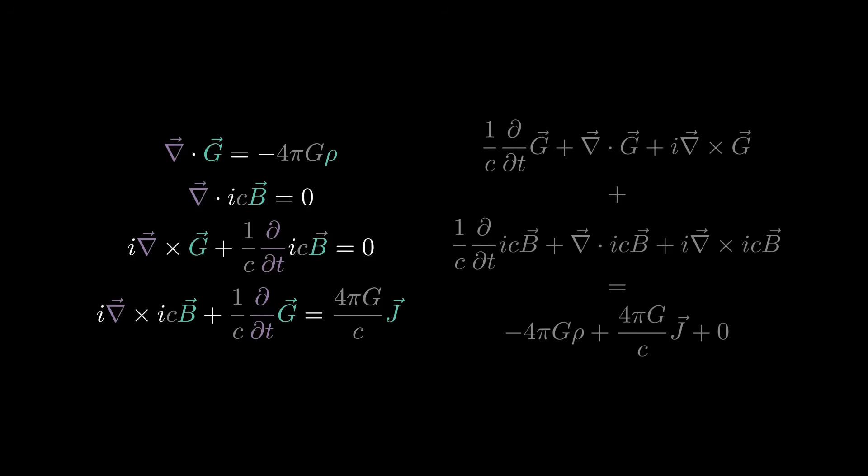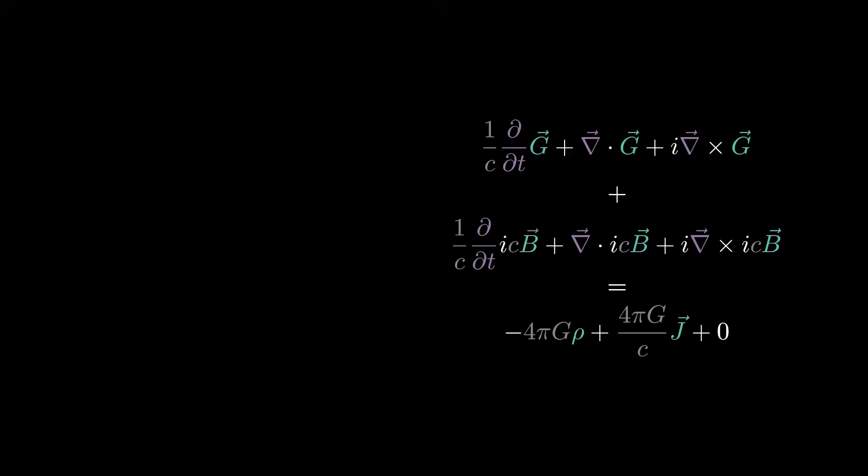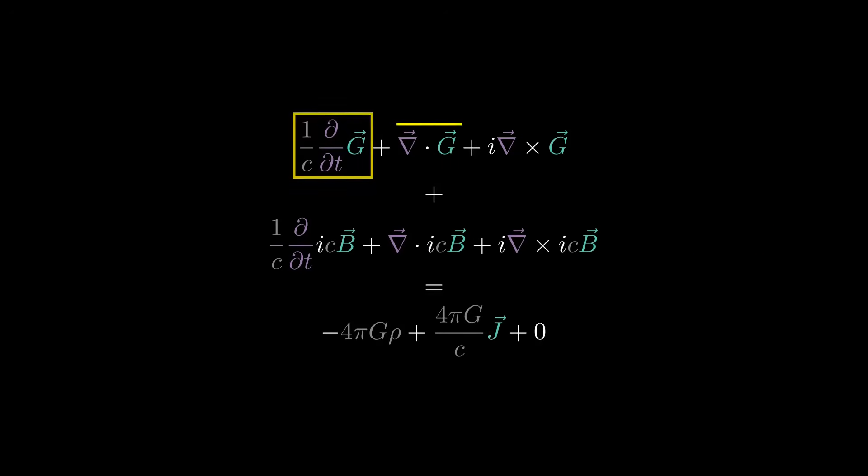Next step is to write the full set of equations as a geometric sum, so that we get a multivector at each side of the identity. A vector, plus a scalar, plus a bivector, and so on.